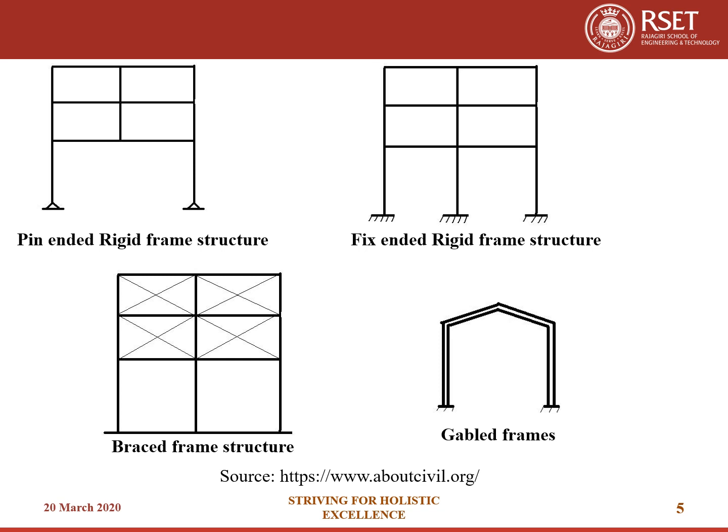A pin-end rigid frame system usually has pins as their support conditions. This frame structure is considered to be non-rigid if its support conditions are removed. In fixed-ended structural frames, the end conditions are usually fixed as compared to the pin-end rigid frame structure. Braced structural frames are defined as structures in which bracings are provided between beams and columns to increase their resistance against lateral forces and side sway forces due to applied load. Bracing is done by placing diagonal members between the beams and columns, providing more efficient resistance against earthquakes and wind forces.